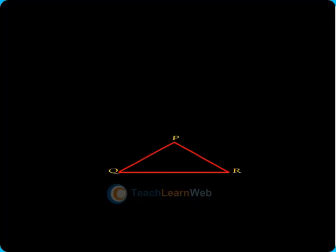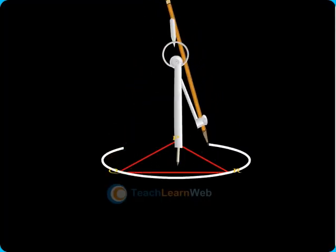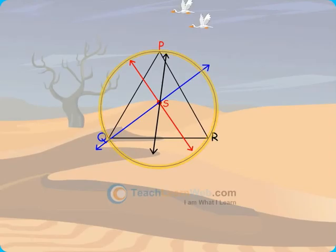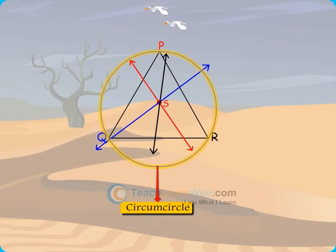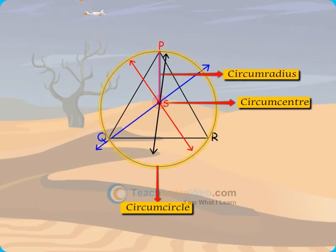With S as centre and SP as radius, draw a circle. You will find that this circle passes through Q and R. The circle is the circumcircle and the centre S is circumcentre and the radius SP is the circumradius.